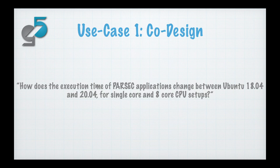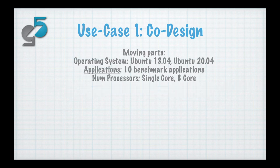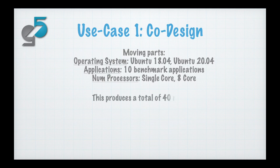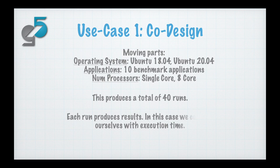As a basic co-design question, we are asking how does execution time of Parsec applications change between Ubuntu 18.04 and 20.04 for single core and eight core CPU setups. The parameters in this experiment are changing between the operating systems Ubuntu 18.04 and 20.04, jumping between 10 different benchmark applications, and analyzing on single core and eight core architectural setups. This reaches a total of roughly 40 runs, and for each run we are looking at the execution time.